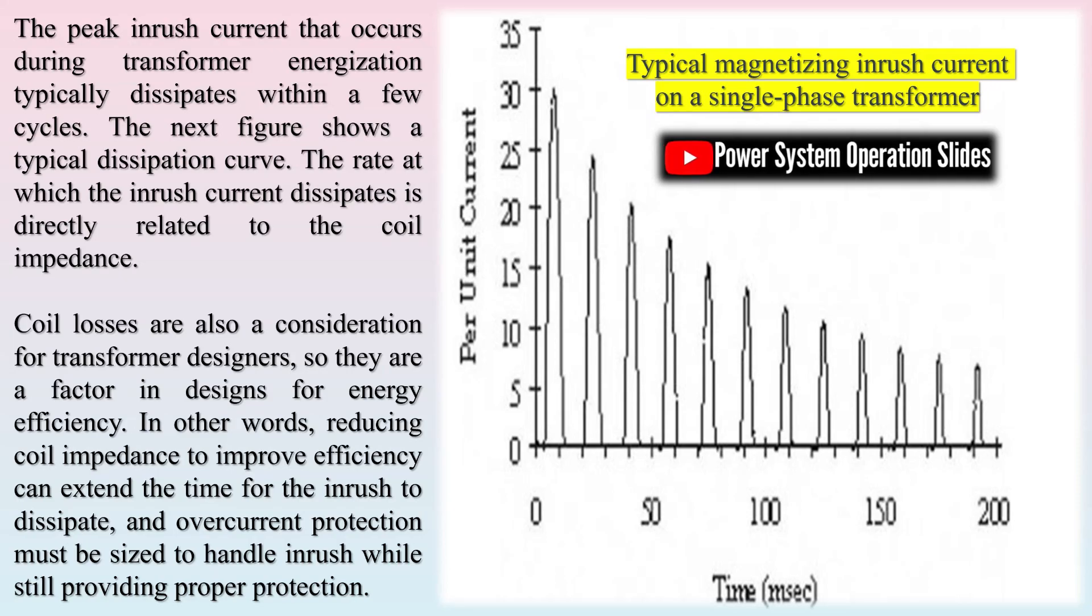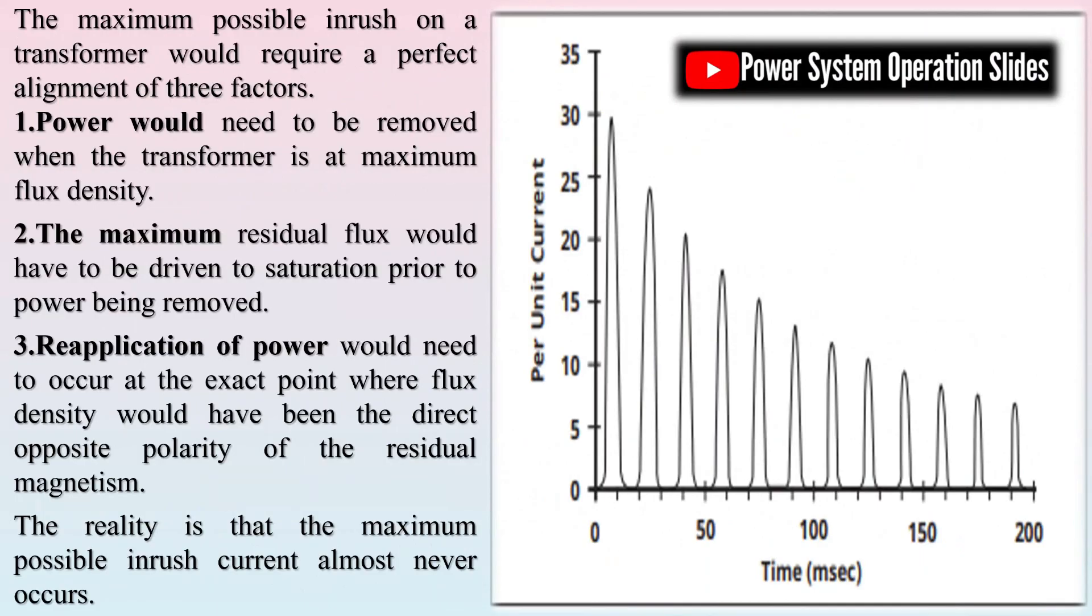This is accomplished by selecting a fuse with a TCC (time-current characteristic curve) which sits to the right of the transformer's inrush curve. Overcurrent protection devices must be coordinated to allow for transformer inrush current. If inrush current is not taken into account when sizing overcurrent protection for a transformer, nuisance tripping may result—breakers or fuses operating as a result of a transformer's exciting current upon energization. The residual magnetism is dependent on where in the hysteresis loop power is removed.